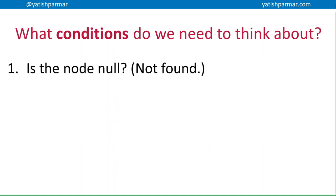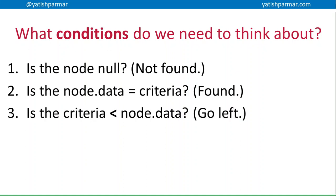So the conditions that we're thinking about here are: first of all, is the node null? If it is, then it's not found, because that means that the previous node that we were looking at was a leaf node. If the node data matches the criteria, i.e. the keys match, the key at the node and the key that we were searching for match, then we've found what we're looking for.